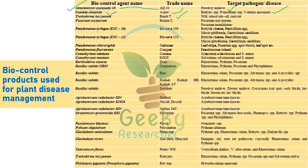Biofox C is Pseudomonas syringae ES10 and ES11, with trade names Biosave 100 and 110. Pseudomonas chlororaphis has the trade name Cedomon, and Pseudomonas fluorescens has the trade name Conquer. Coniothyrium minitans is a biocontrol agent recommended against Sclerotinia sclerotiorum.